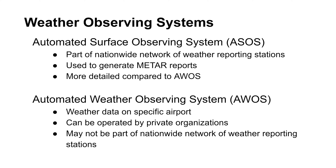There are two main types of weather observing systems in the United States: Automated Surface Observing System or ASOS, and Automated Weather Observing System or AWOS. ASOS is the main weather reporting system that is part of the nationwide network of weather reporting stations. It uses sophisticated sensors to generate minute-by-minute weather data that can be transmitted to pilots. METAR reports are generated using predominantly ASOS data, and ASOS gathers much more information that is later used in weather forecasts.